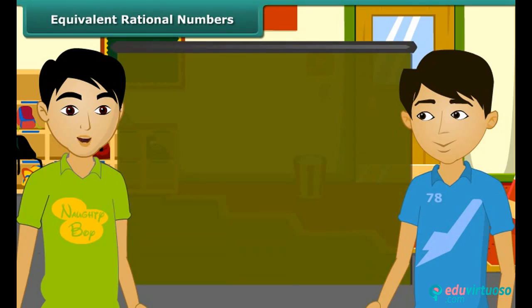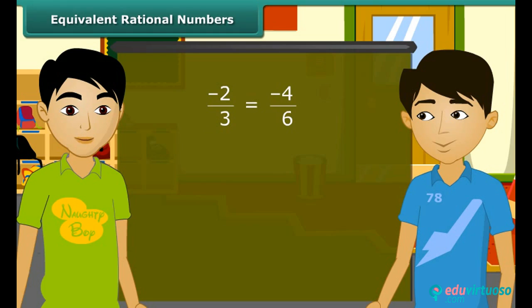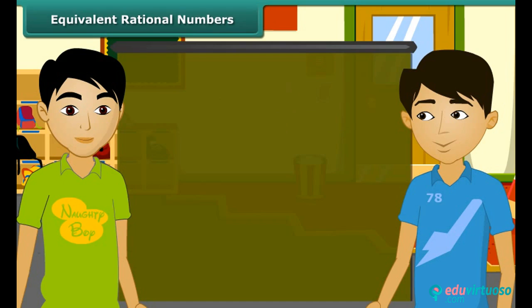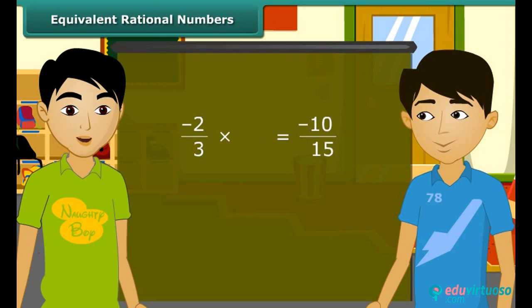Look at this rational number. Now look at this rational number. These both rational numbers are equivalent, but how? When we multiply the numerator and denominator of a rational number by the same non-zero integer, we obtain another rational number which is equivalent to that number. Similarly, minus 2 by 3 is equivalent to minus 10 by 15, because when we multiply the numerator and denominator by 5, we get minus 10 by 15.